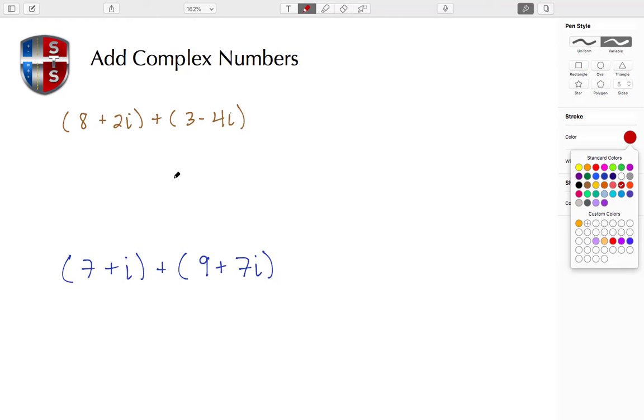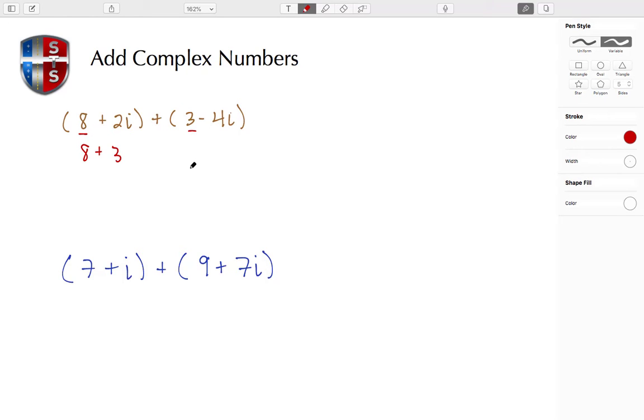Let's go ahead and put our real numbers together, so that's going to be the 8 plus the 3. So the 8 here and the 3, and then let's put our imaginary parts together. So that's the positive 2i, and then minus the 4i.